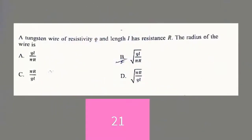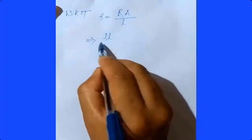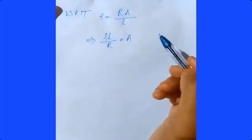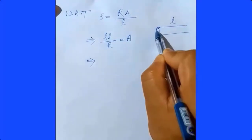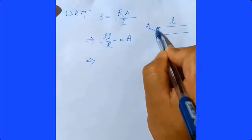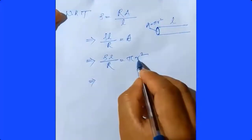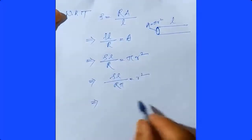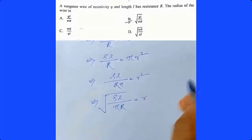A tungsten wire of resistivity rho and length L has resistance R. We have to find the radius of the wire. We know that resistivity rho equals resistance times area of cross-section divided by the length: rho equals R times A divided by L. The cross-section is circular, so A equals pi*r squared. Solving for r: r squared equals rho*L divided by (R times pi), so r equals the square root of (rho*L divided by pi*R). Option B is the correct answer.